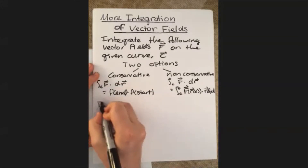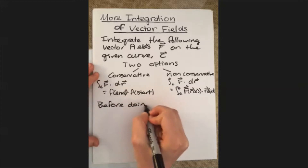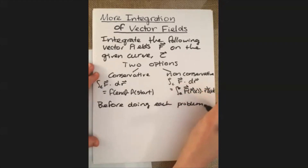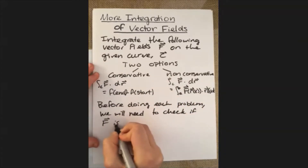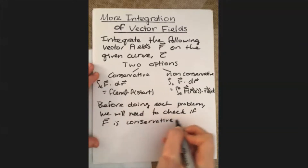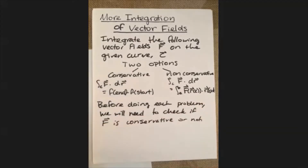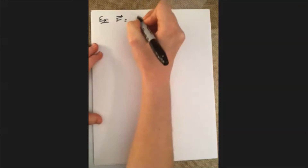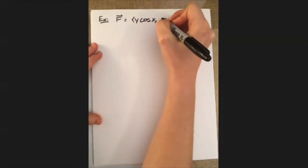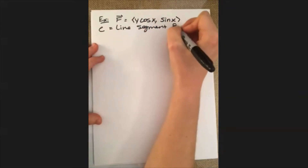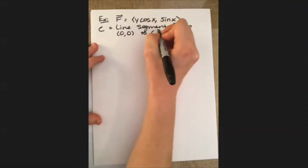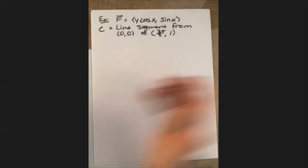Before actually doing each problem, we will need to check if F is conservative or not. Our first example: we have F equal to (y cos x, sin x), and we're told that C is the line segment from (0, 0) to (3π/2, 1). So checking to see if it's conservative is going to be our first step.